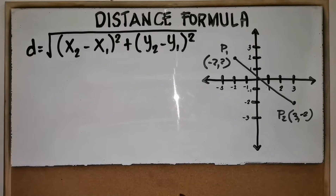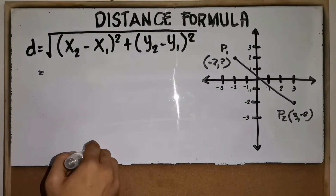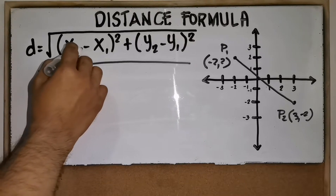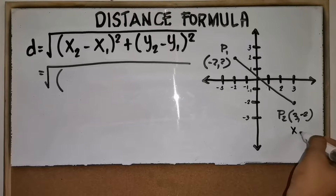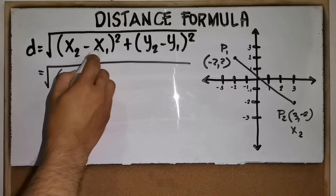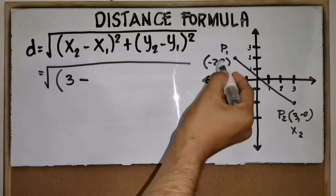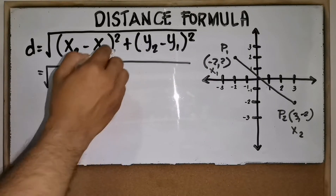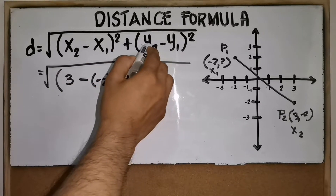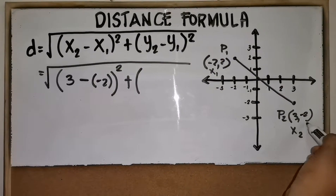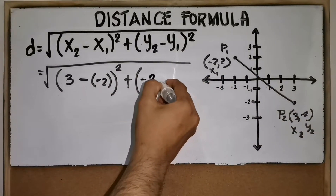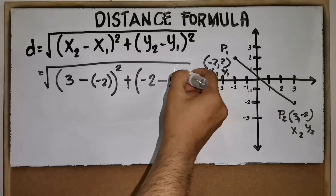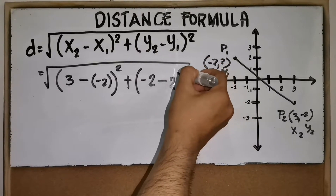First, write the formula. Next, substitute the given values: x sub two is the x of your second point, which is 3; minus x sub one, which is the x of your first point, which is negative 2. Don't forget the parentheses, then raise to the power of 2. Plus y sub two, which is negative 2; minus y sub one, which is 2. Close the parentheses and raise to the power of 2.